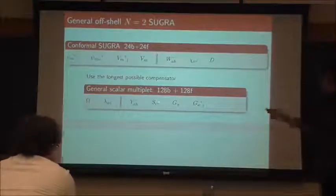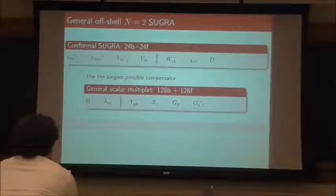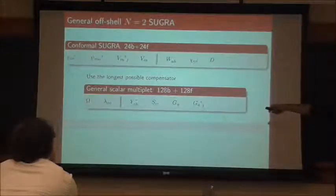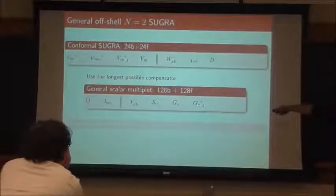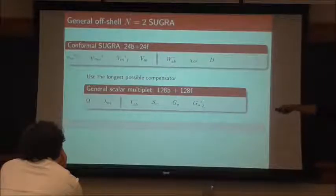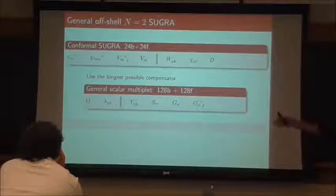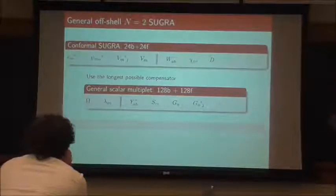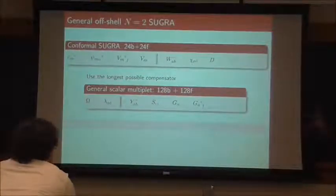These are the fields that you find at the θ² level, and it turns out the θ² level is all that we need to worry about. You've got an anti-self-dual tensor Y, an isotriplet complex scalar S_{IJ} in the R-symmetry group SU(2), another auxiliary scalar G, and another auxiliary scalar isotriplet G_{IJ}. I'm using SU(2) for my R-symmetry group, so I can raise and lower SU(2) indices with ε_{IJ}. If you see these indices start changing positions, that's all that's happening.